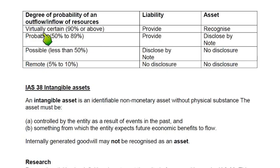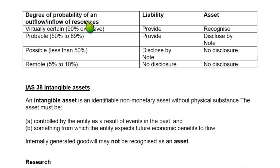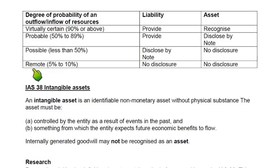A summary table covers four levels of probability. Virtually certain means more than 90% — it is bound to happen. Probable means more than 50% and less than 90% — more likely than unlikely. Possible means less than 50% probability. Remote means 5 to 10%. For liabilities: if the chance is virtually certain or probable (more than 50%), the liability is recognized immediately as a provision.